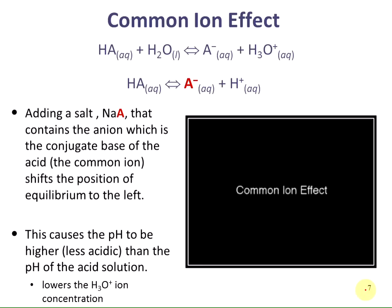When using a buffer, we have the common ion effect — there's a video on Blackboard that illustrates this principle. Adding a salt that contains the conjugate base — in our example, sodium acetate — provides the A- anion, which is the conjugate base of the acid. This A- is the common ion, and it shifts the position of the equilibrium to the left. This causes the pH to be higher — less acidic than the pH of the acid solution alone — lowering the hydronium ion concentration.